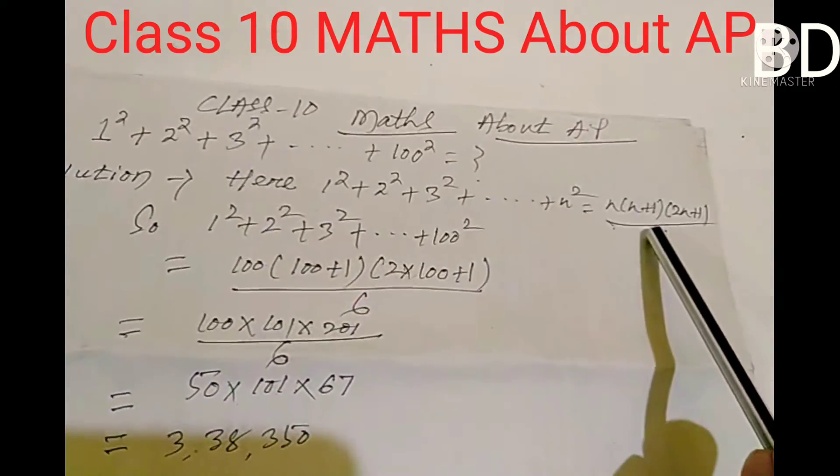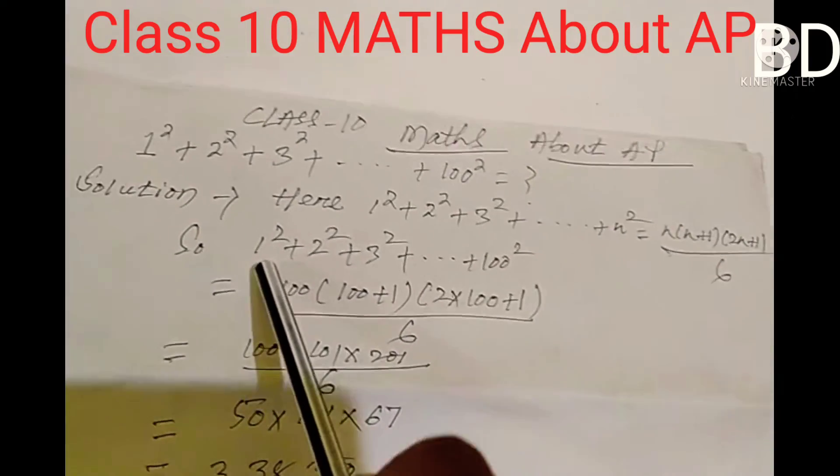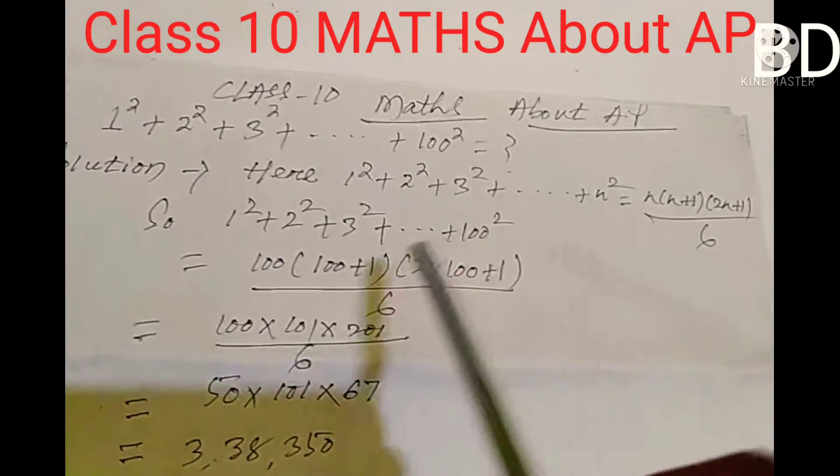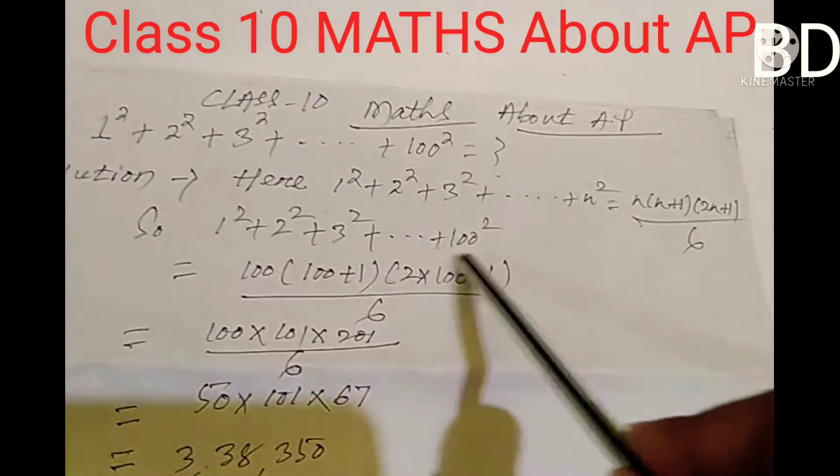We will apply this formula to our problem: 1 squared plus 2 squared plus 3 squared plus dot dot dot plus 100 squared. Here n equals 100.